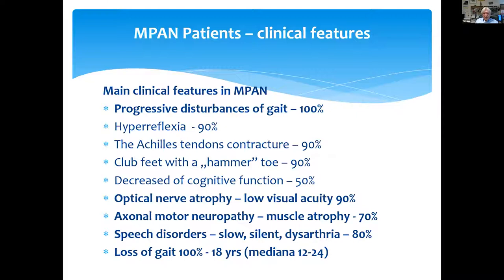What are the main clinical features? There is progressive deterioration of gait in 100% of patients, hyporeflexia in 19% of patients, and Achilles tendon contracture. We observed in all patients club feet with hammer toes. In half of the patients we observed decrease of cognitive function.